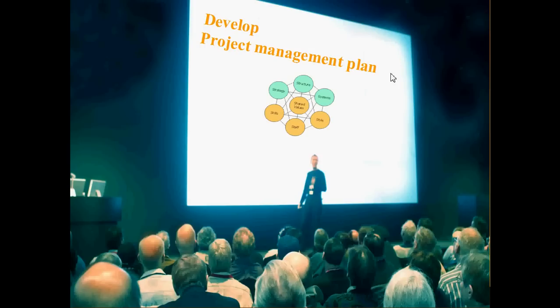Let's recap what we've covered so far. We started with project initiation, where the inputs were the statement of work, a copy of the contract, enterprise environmental factors, and organizational process assets. There are two steps in initiation, both done by the project sponsor: develop a project charter, and prepare a stakeholder register. During the charter process, a project manager is identified and appointed, who then takes the project into the planning phase.